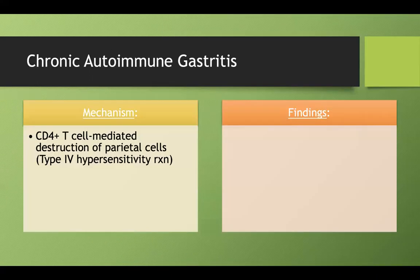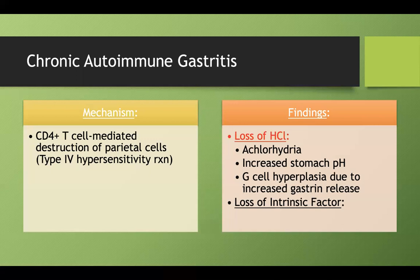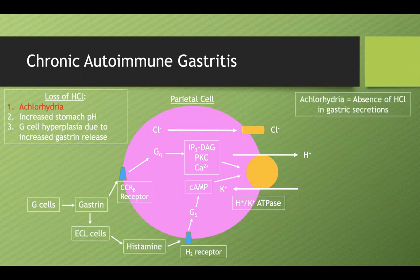The presentation of chronic autoimmune gastritis is really straightforward because parietal cells do two things: they secrete HCl and they secrete intrinsic factor. When you don't have enough HCl, you'll get achlorhydria — the absence of HCl in your gastric secretions. If you don't have a parietal cell in the first place, you can't produce and secrete those ions into the lumen.